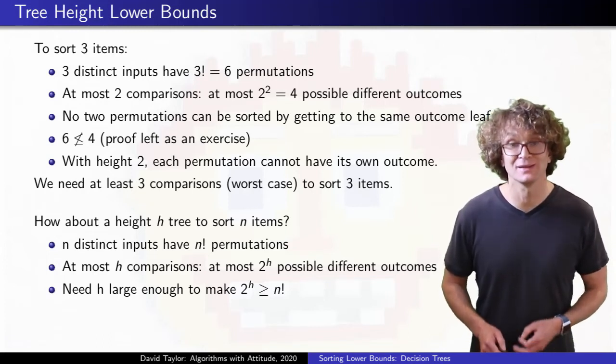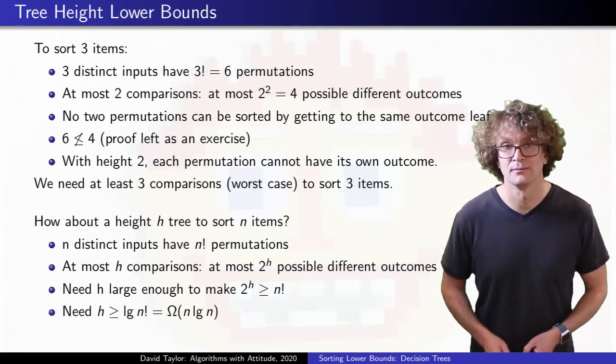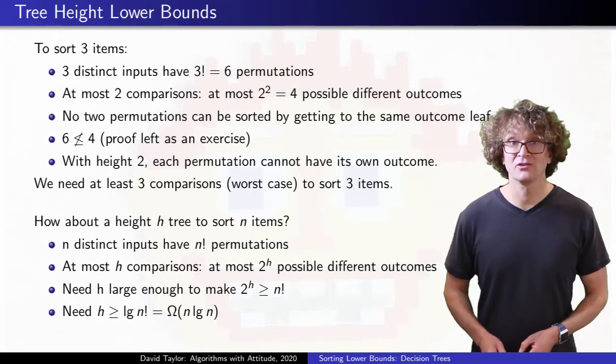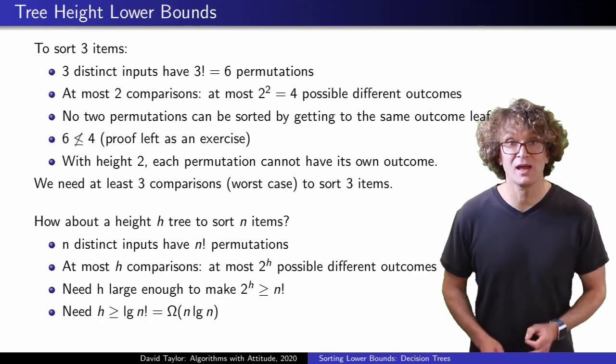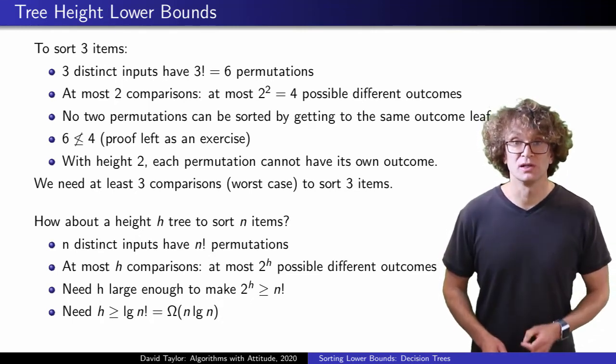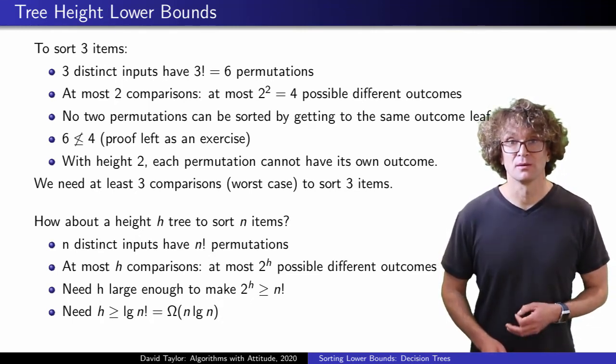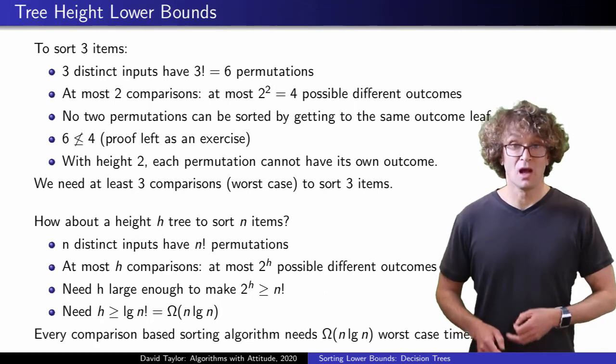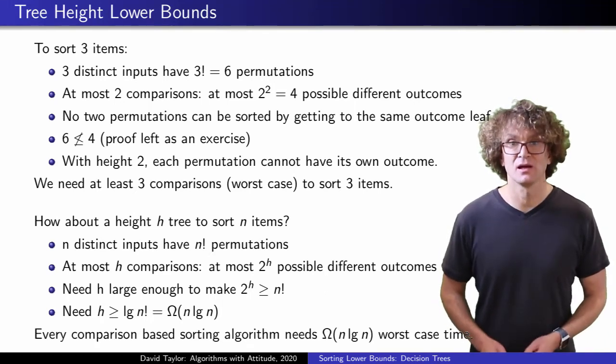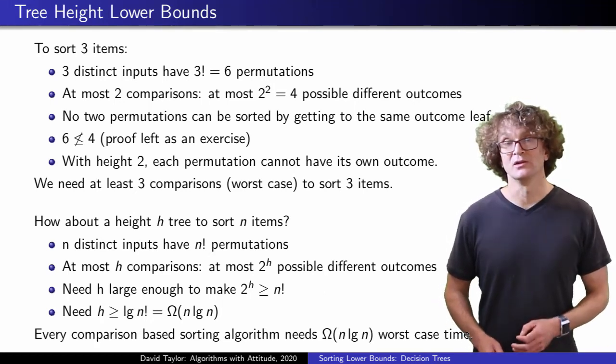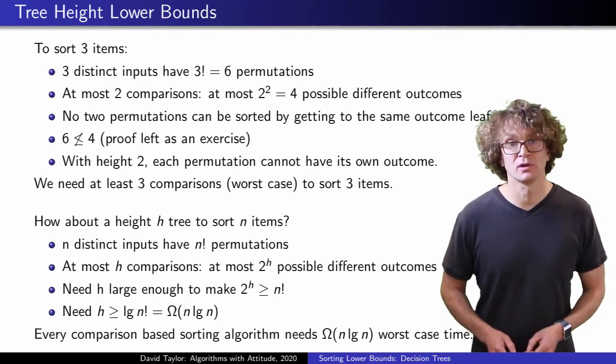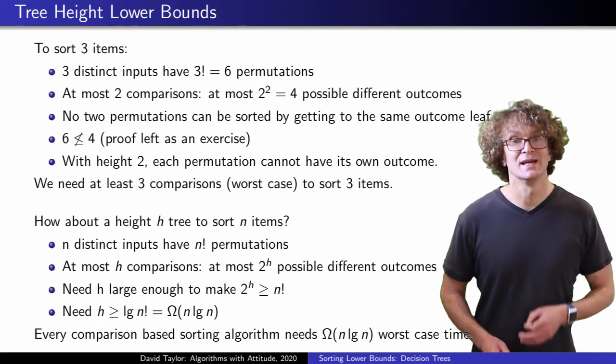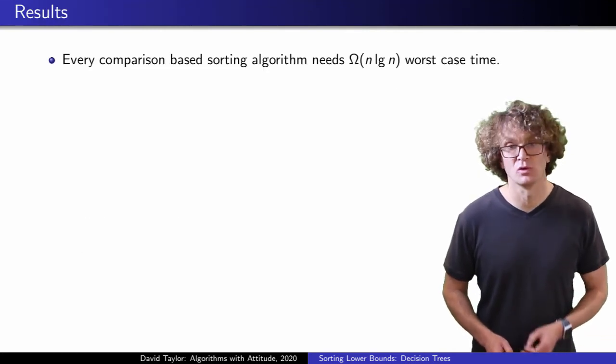So two to the h has to be at least n factorial, and h has to be at least order n log n. If the tree has height, order n log n, that means that, in the worst case, the decision tree makes order n log n comparisons, so the algorithm takes at least n log n time. That is, no matter how clever, any comparison-based sorting algorithm will take at least n log n runtime in the worst case.